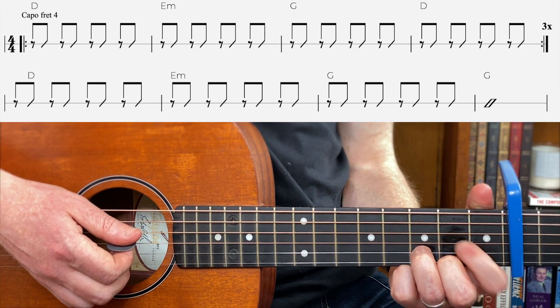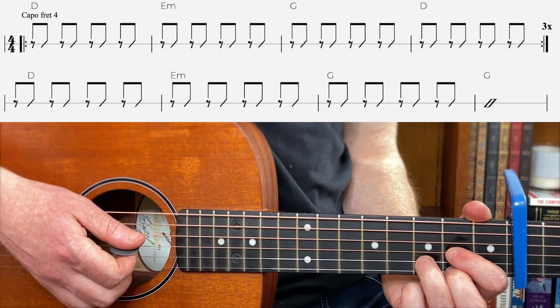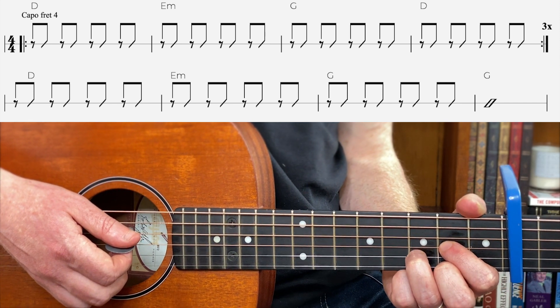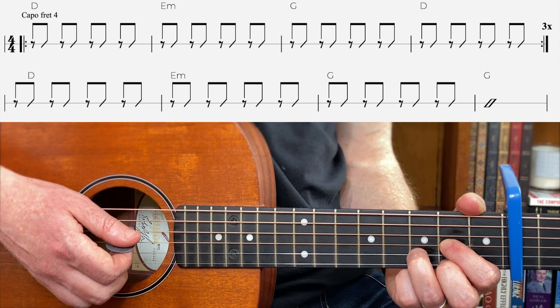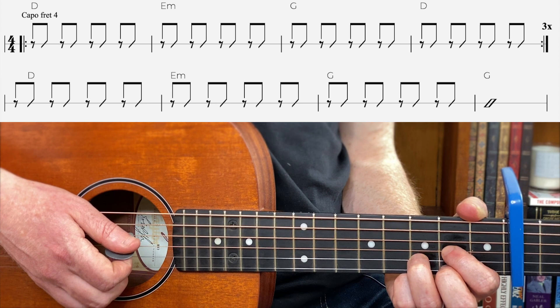So with this song, we have a capo on the fourth fret. For this Jason Mraz song, we are going to play primarily open chords. There is a B minor stuck in later on. There are ways around that too if you don't play bar chords. So here's the deal.